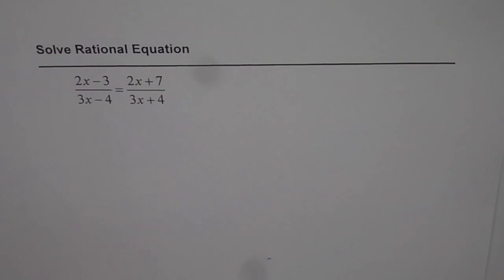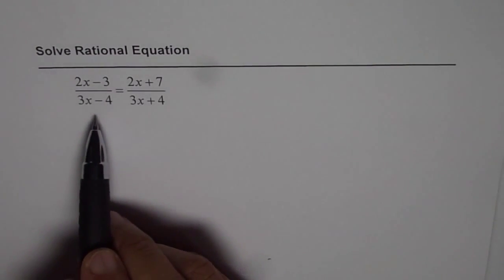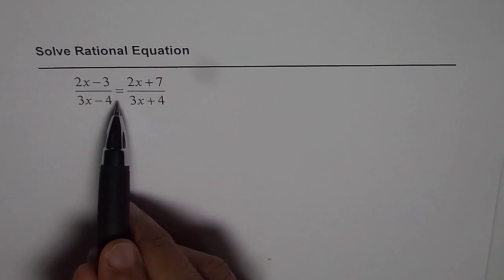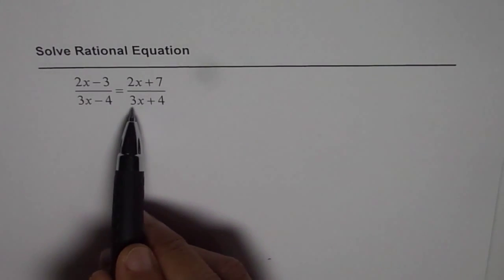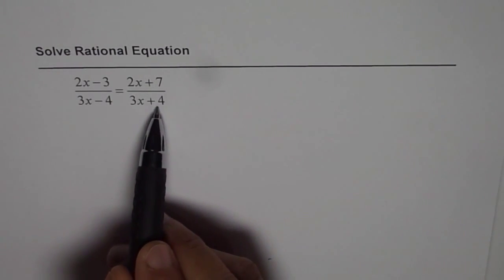I'm Anil Kumar and in this video we will learn how to solve a rational equation. We have 2x minus 3 divided by 3x minus 4 equals 2x plus 7 divided by 3x plus 4.